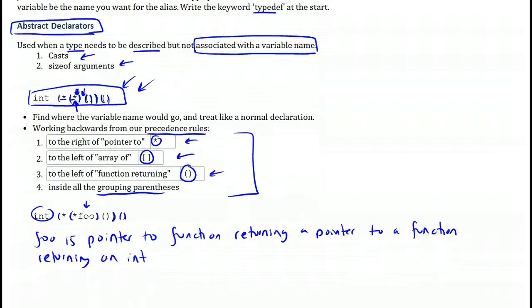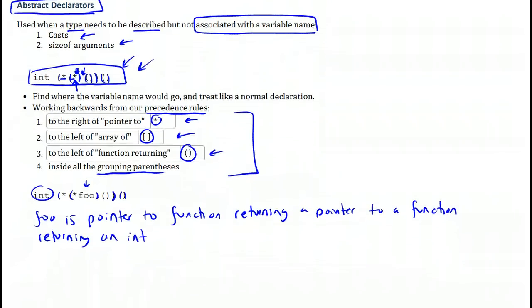Hopefully this makes it easier for you to read type declarations in C. It's also worth noting that although we could build all sorts of type declarations using these syntax rules, not all of them are actually valid or correct.